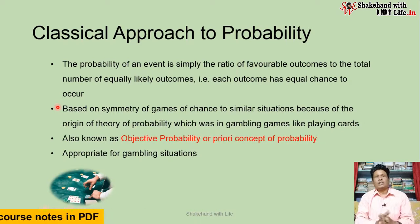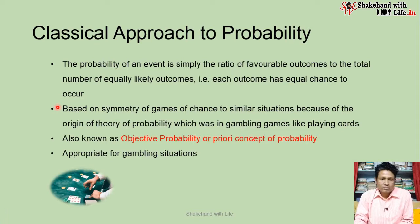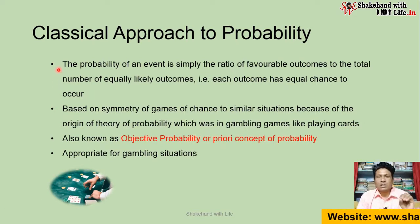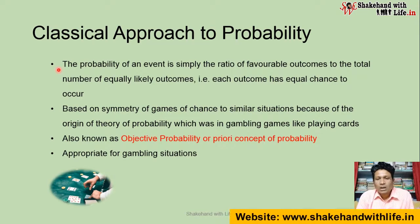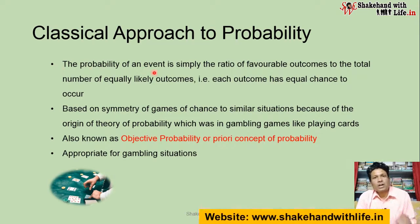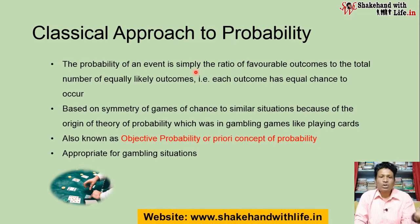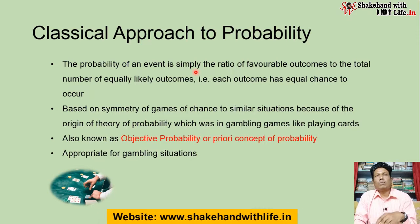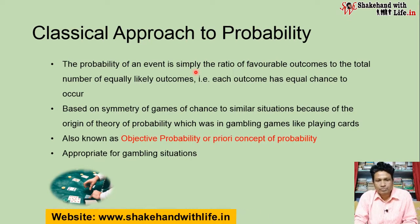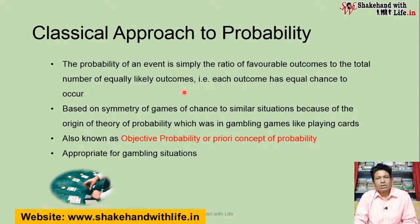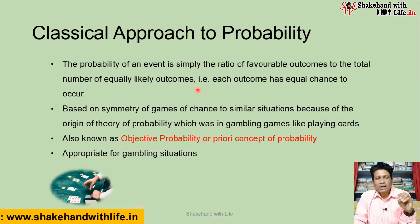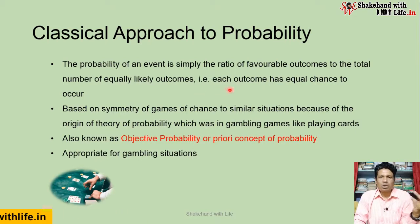What is the classical definition of probability? The probability of an event is simply the ratio of favorable outcomes to the total number of equally likely outcomes. Equally likely means each outcome has an equal chance to occur.